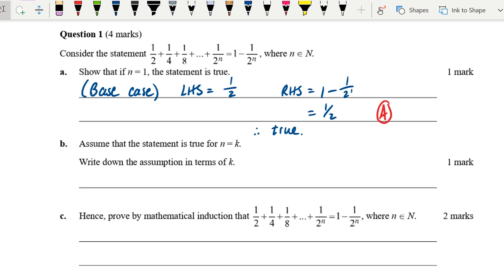For part B, this is the assumption. Again, in induction, we're always going to have an assumption and then a proof for the next integer. The question is to write down the assumption in terms of k. Again, that's very easy. All we're going to do is rewrite the exact same statement we had in terms of n, but replace n with k, and there's an easy mark.